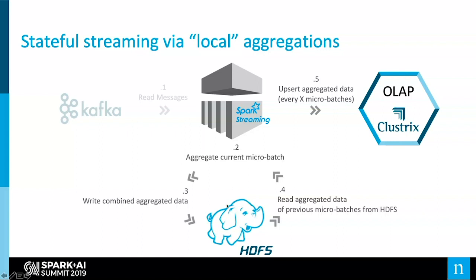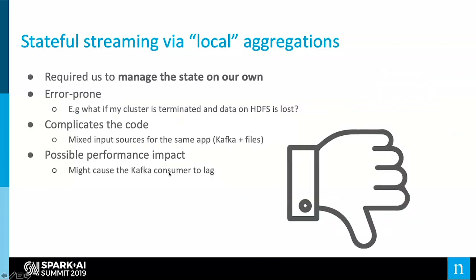We were doing long micro-batches — for example, one-hour micro-batches — because we wanted to load the aggregated data as efficiently as possible to our OLAP engine. Long micro-batches allowed us to have better aggregation ratios. For example, if I had 300 million messages per one-hour micro-batch, the output after aggregation could be only around one million rows — a significant aggregation ratio. However, as you can probably guess, this wasn't enough.